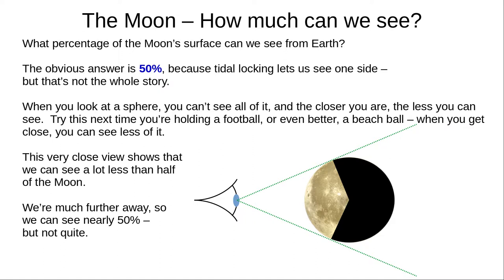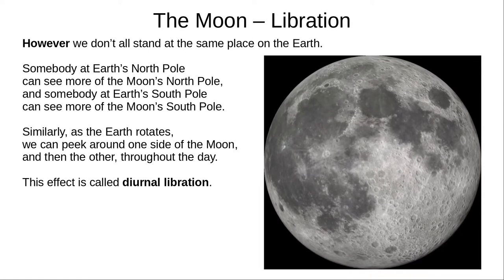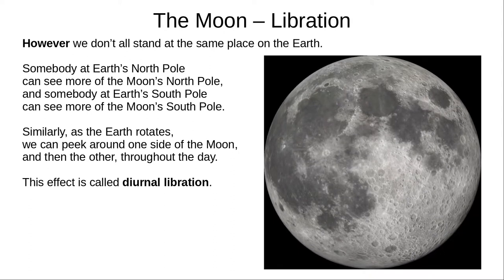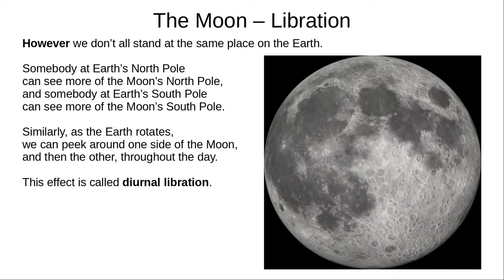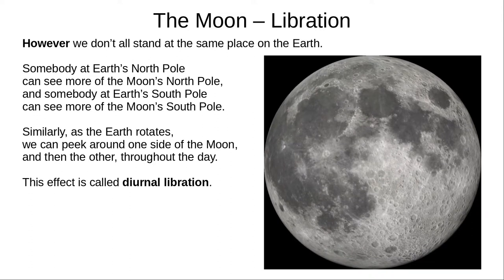So now you're probably thinking that without space probes we can see 50% of the Moon — that makes sense, but it's not quite true. Get a big ball — a beach ball is good for this. Look at it, and then move closer and further away. You'll notice that as you get closer, you can see less of it, because of the angle of your lines of sight. So we can actually see slightly less than 50% of the Moon. There's an effect called libration, which comes in three different varieties. As we move across the Earth, our angle of sight to the Moon changes, letting us peek around the edges. We also move from west to east as the Earth rotates, so that at different times of the day or night, we can peek around the sides. This is called diurnal libration.